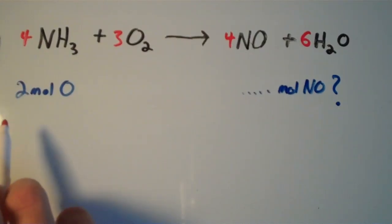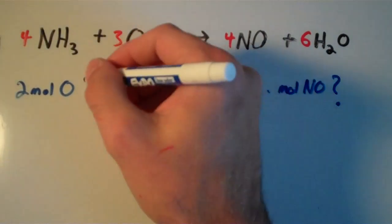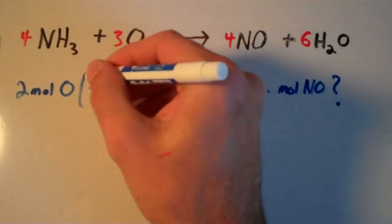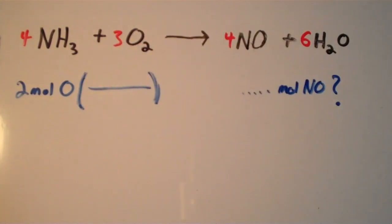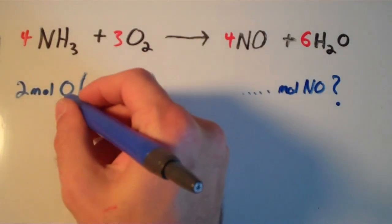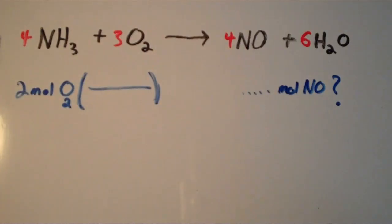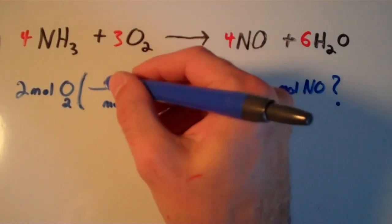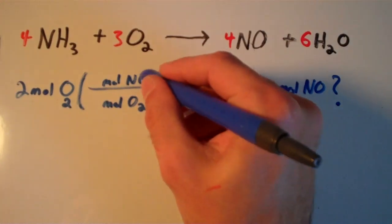Once again, I start out with 2 moles of oxygen and I want to figure out the moles of NO. So it's a good idea to set up a conversion factor. The thing that we're given is moles of oxygen, but I want to figure out the moles of NO. So I'm going to put moles of O2 on the bottom and then moles of NO on the top.